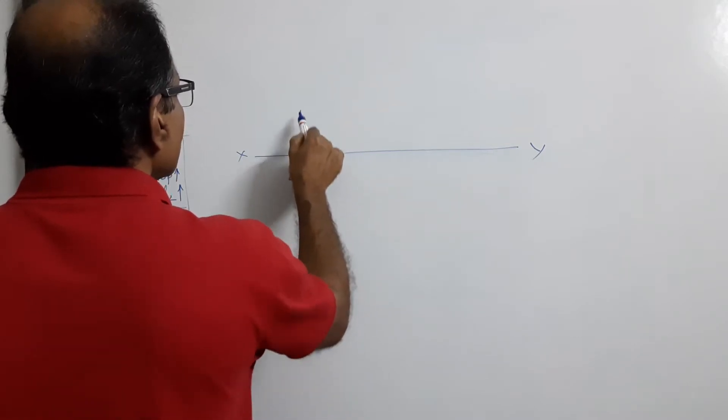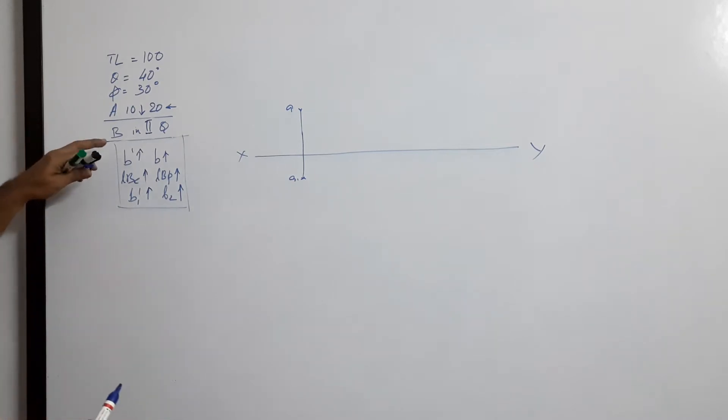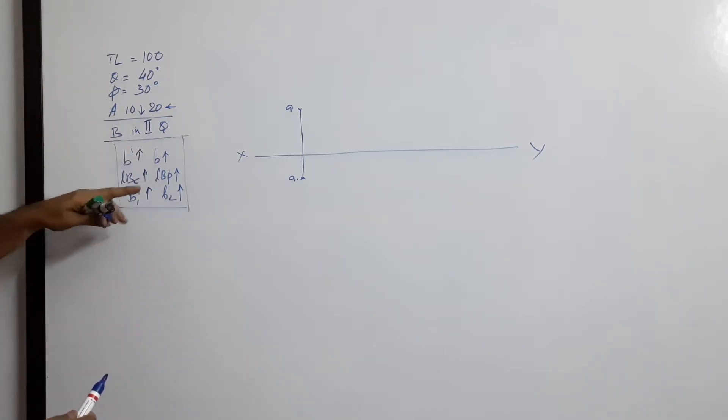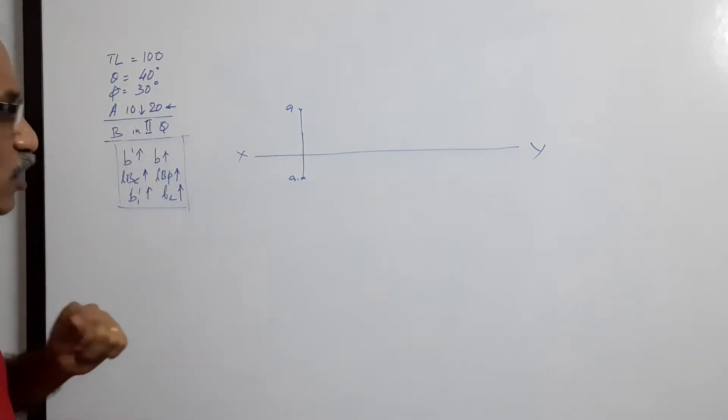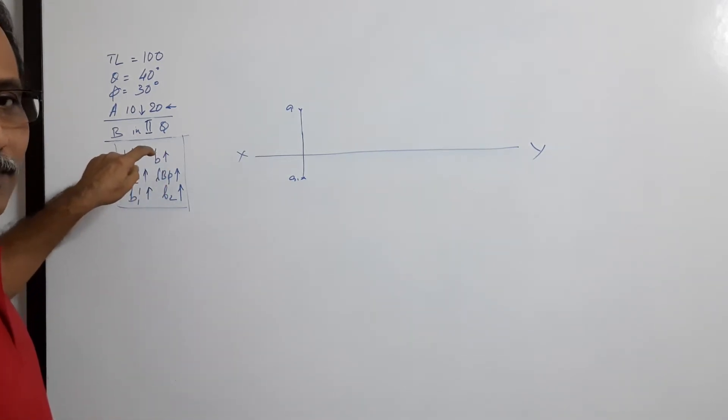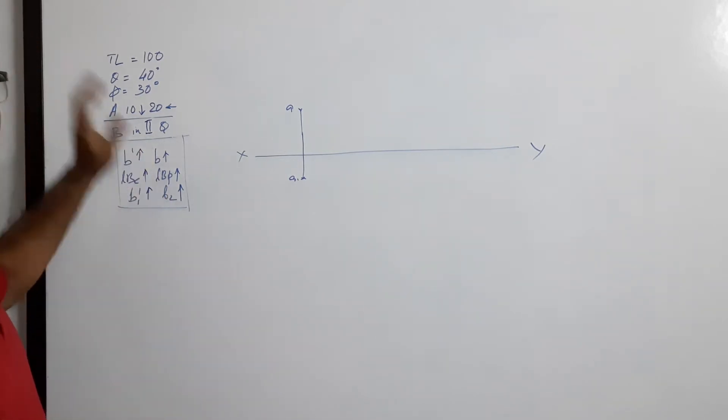A dash A. When B is in the second quadrant, both plan and elevation of end B go above XY line, so LBP and LB also go above XY line, and B1 dash and B2 go above XY line. End B in second quadrant, B is the plan and elevation above XY, and B1 dash B2 is above XY line.